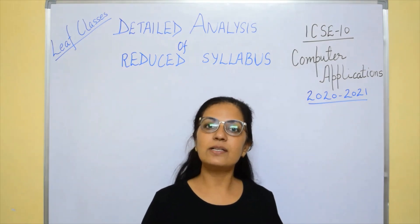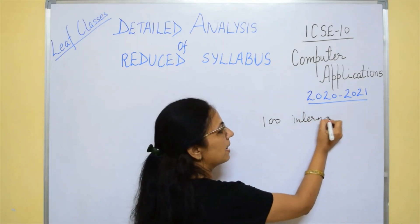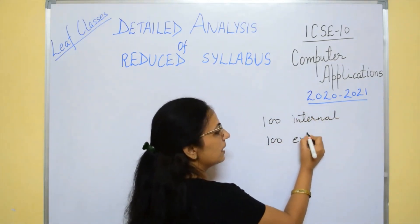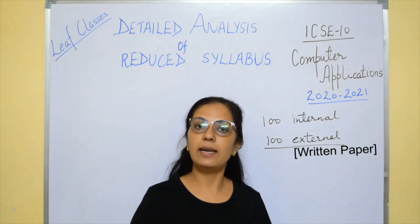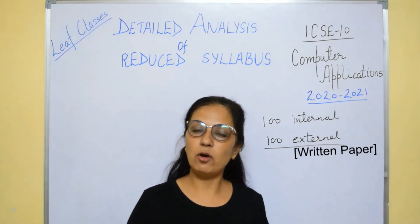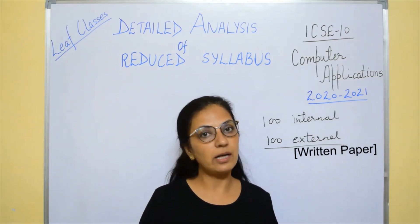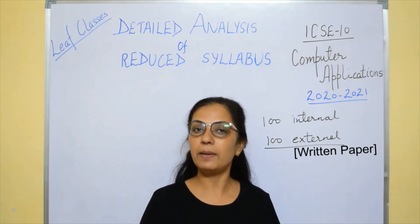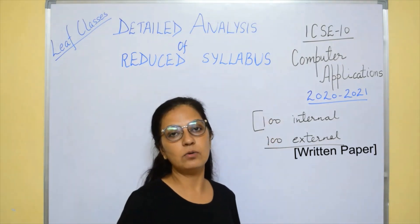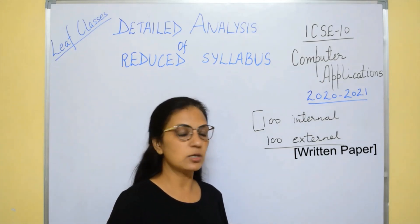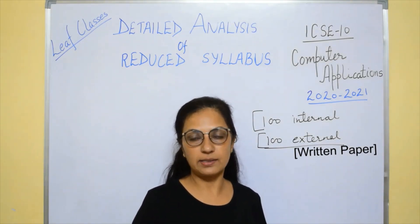The first doubt is related to the theory paper. Children, you have 100 marks internal assessment and 100 marks external assessment. Don't get confused that this is only a theory paper — programming will be there like previous years. Section A will be of 40 marks, and Section B of programming will be of 60 marks. Children have asked that since it says theory paper, will there be no programming? No, children — you will have programming. Section B will be only programming, 60 marks. As per the guidelines of the council, the 100 marks internal assessment will be done by your school, and this written paper will be 100 marks.